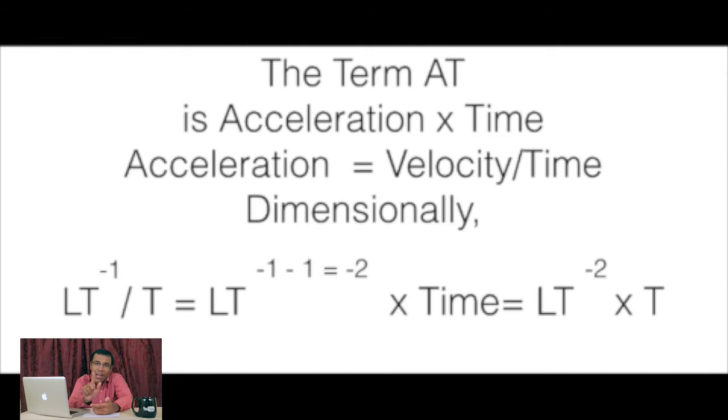Acceleration equals velocity — L T power minus 1 — divided by T, which gives L T power minus 2. The second term AT is A into T, so L T power minus 2 into T power 1, giving minus 2 plus 1 equals minus 1. So the resultant of AT is L T power minus 1, which is a velocity. U is L T power minus 1, AT is L T power minus 1, and their sum by the closure property gives L T power minus 1, which is the same as the LHS. So LHS equals RHS — it abides by the principle of homogeneity of dimensional formulae, and V equals U plus AT is a valid physical relation.